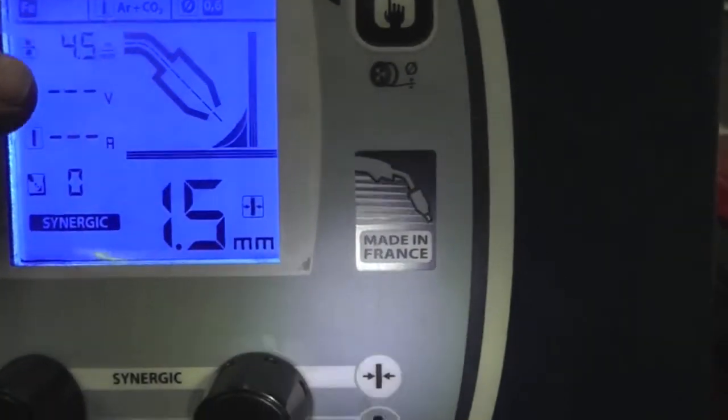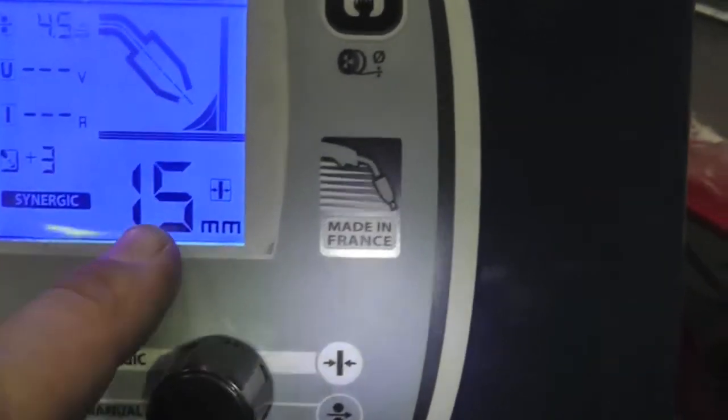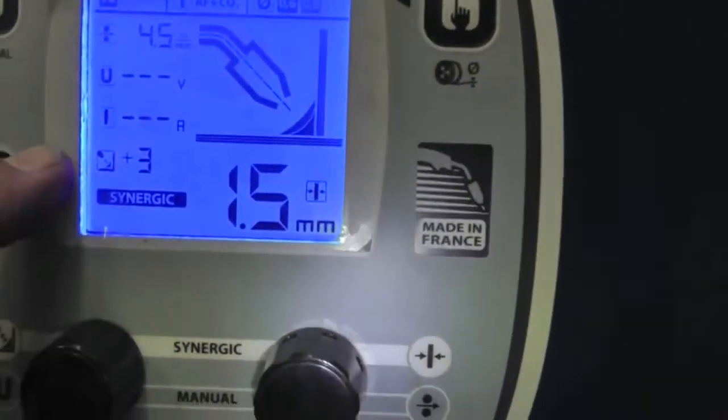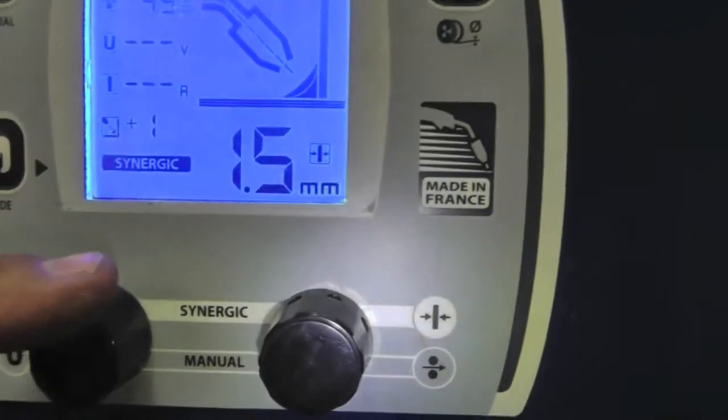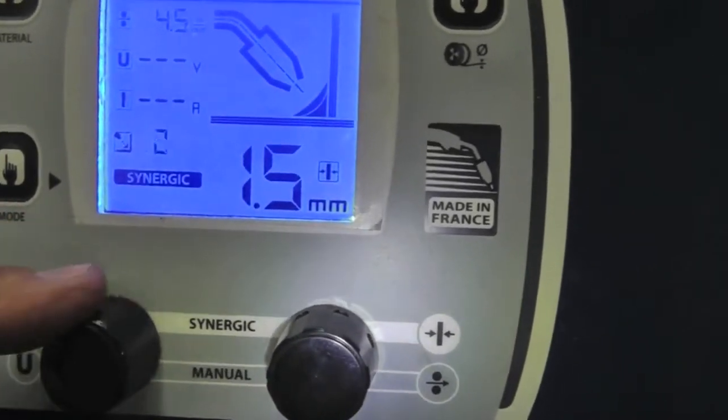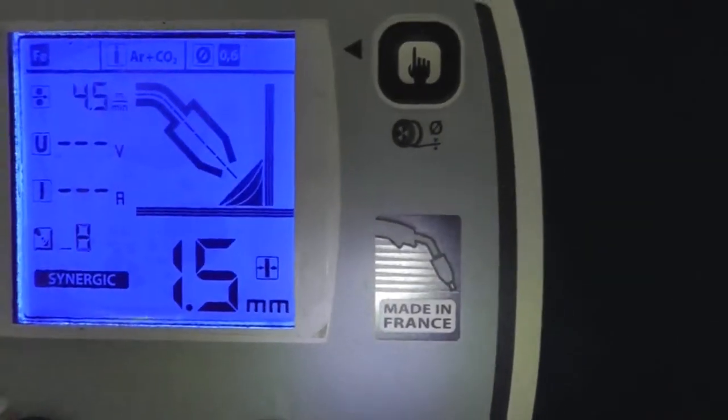Plate thickness and wire feed speed. We've got 4.5 metres per minute there. 1.5mm plate thickness. We're in Synergic. As you can see we can bias the throat depth there. Minus and plus which is basically a volts trim and the effect of more or less wire. As you can see on the graphic.